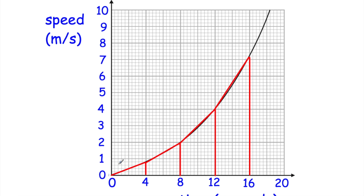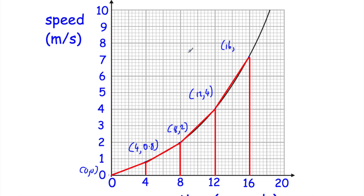Before we start calculating, let's write down the coordinates of the key points. The first is the origin (0, 0). At 4 seconds, the speed reads 0.8 metres per second — since one unit spans 5 small divisions, each is worth 0.2, so 4 divisions gives 0.8. At 8 seconds, the speed is 2 metres per second. At 12 seconds, the speed is 4 metres per second. At 16 seconds, the speed reads one small line above 7, giving 7.2 metres per second.